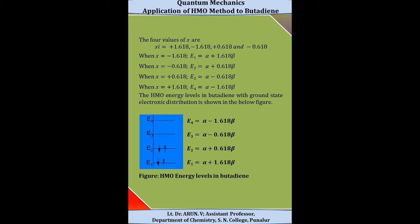When x = −1.618, we get the lowest energy value E1 = alpha + 1.618·beta. When x = −0.618, we get the second energy level E2 = alpha + 0.618·beta. When x = +0.618, we get the next higher energy level E3 = alpha − 0.618·beta. The HMO energy levels of butadiene show that the 4 pi electrons are accommodated in the lowest 2 energy levels, E1 and E2.